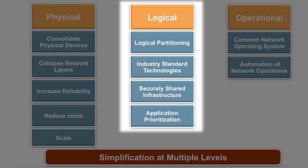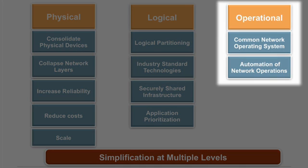Logical level simplification comes from industry standard MPLS and VPN technologies that give you the ability to add on services for efficient and secure utilization of a shared physical infrastructure. You also have greater flexibility to make changes to the underlying WAN type and architecture without impacting applications. MPLS gives you the ability to control where your application traffic flows for better performance, and its inherent resiliency capabilities help maintain continuous business operations. Operational simplicity comes from a common operating system across the enterprise WAN and the capability to automate network operations.